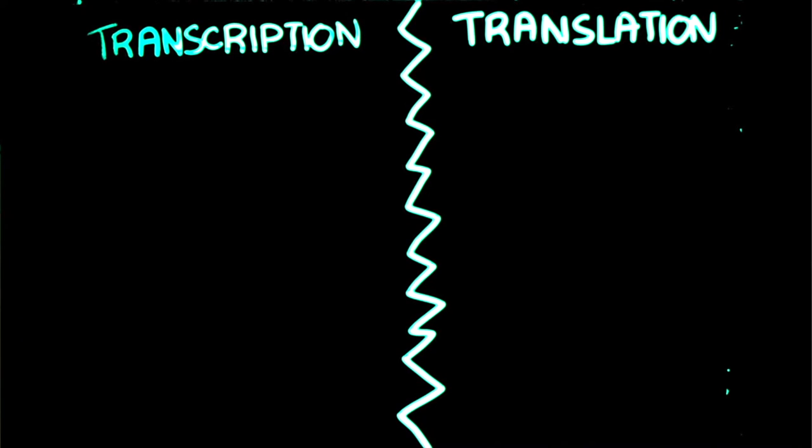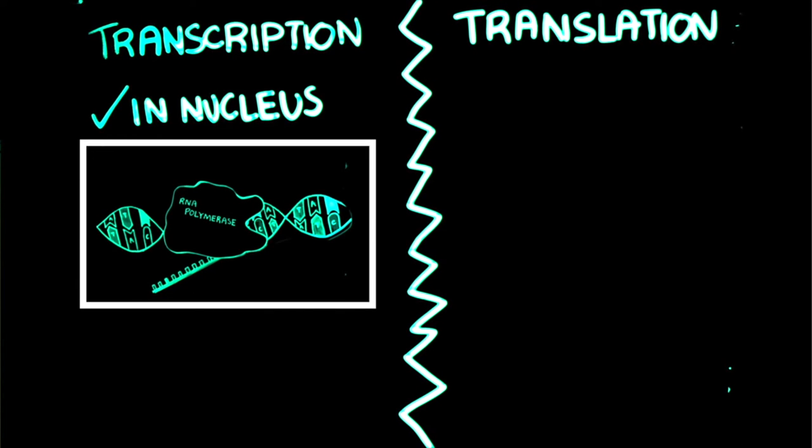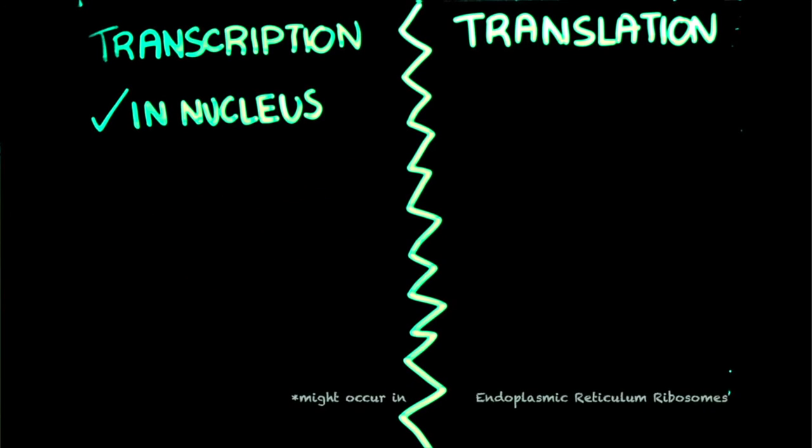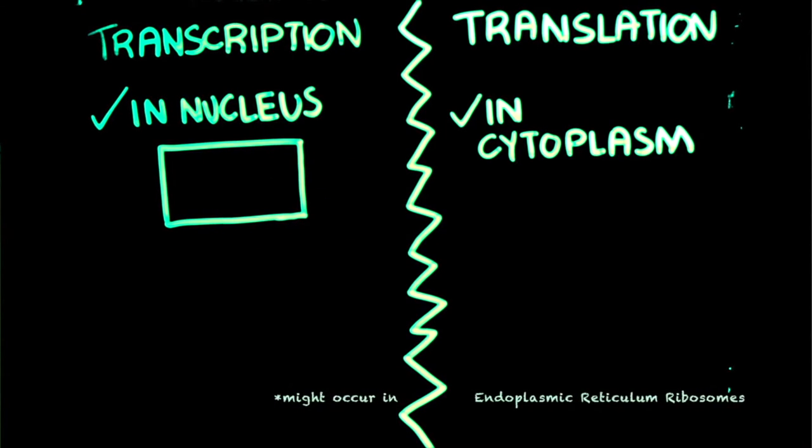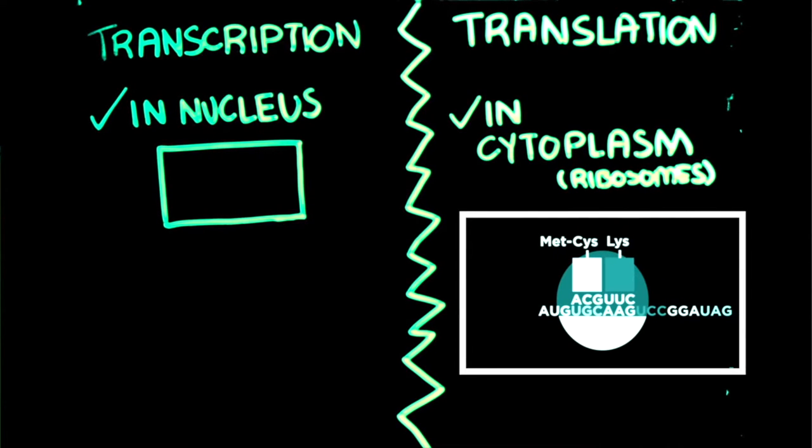Transcription and translation. In eukaryotic cells, transcription occurs in the nucleus, during which the DNA is used as a guide or a template to create mRNA or messenger RNA. Translation occurs in the ribosomes in the cytoplasm, during which the mRNA is used to create a polypeptide.